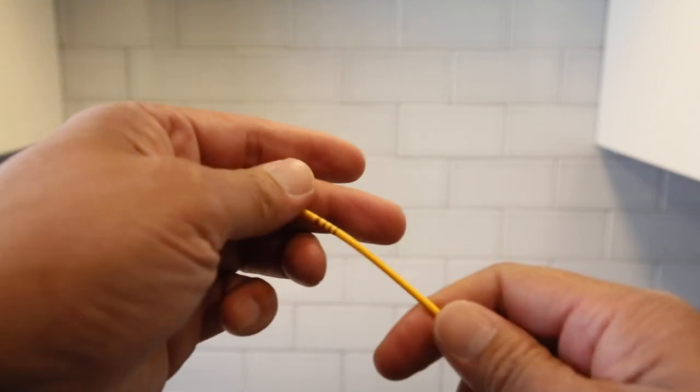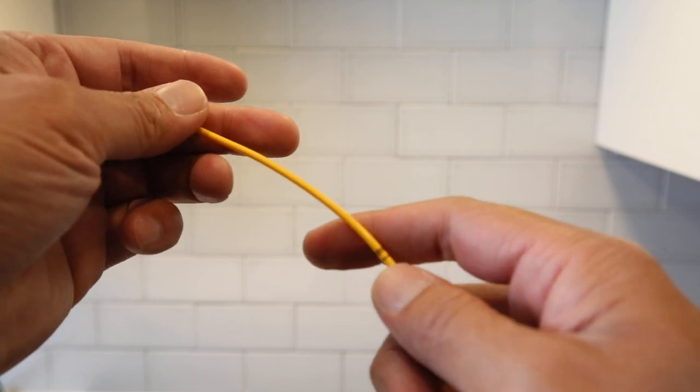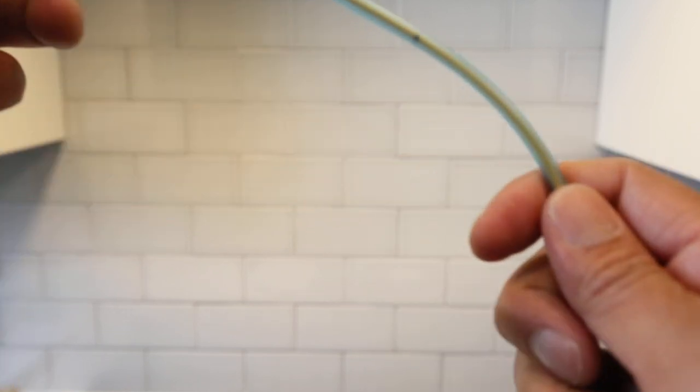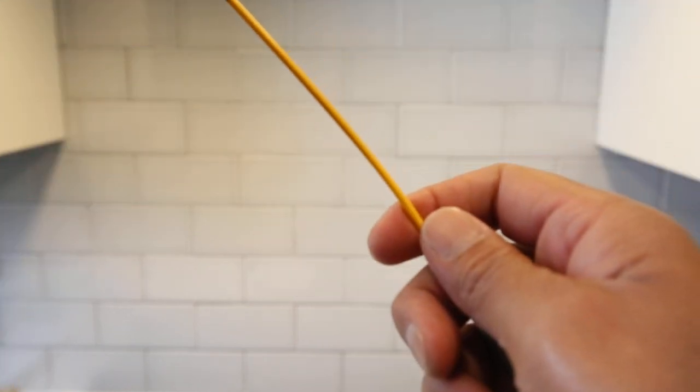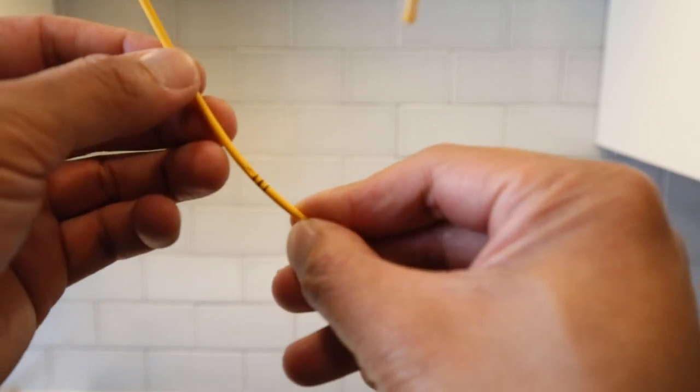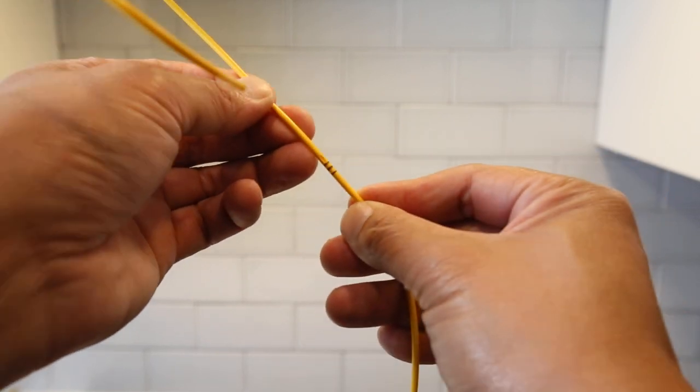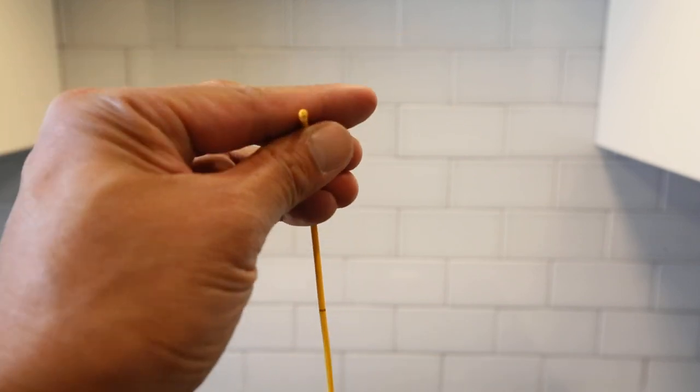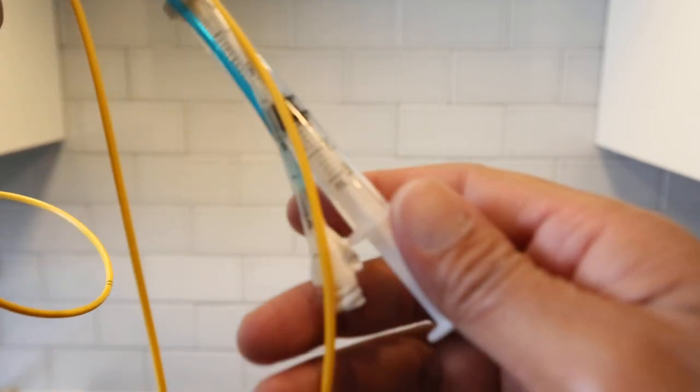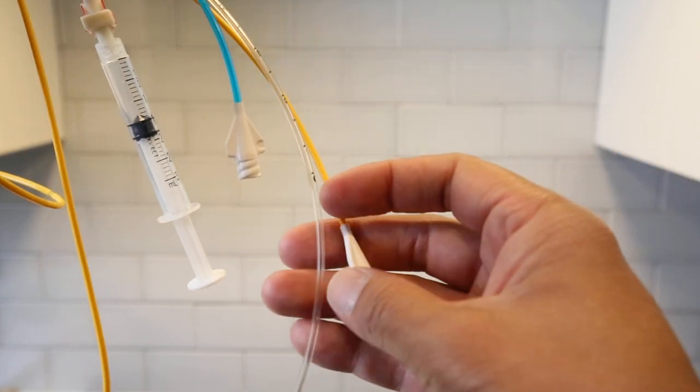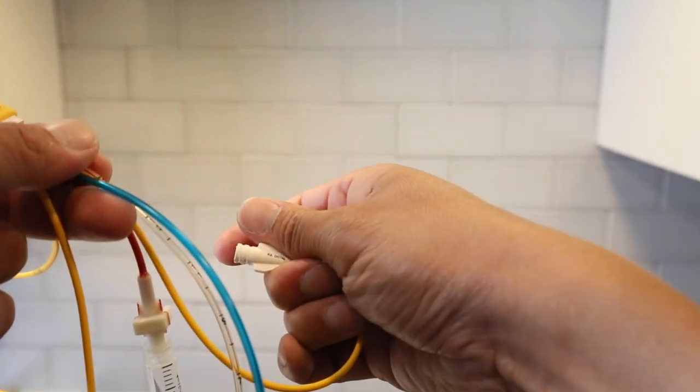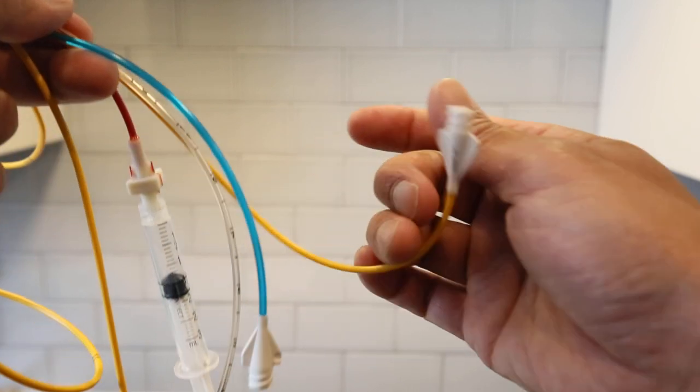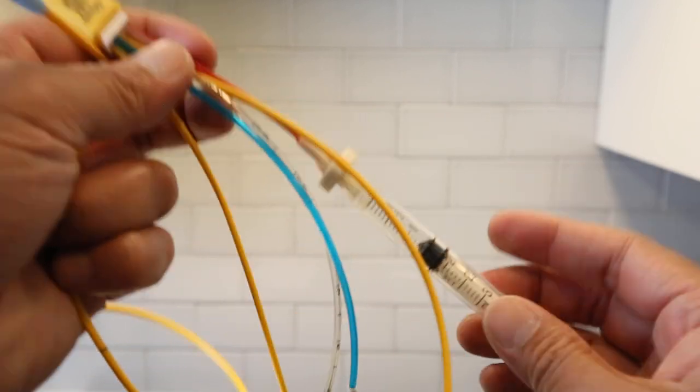So this proximal injectate will coincide with this one, hashtag three. And then this one will coincide with the distal lumen hub. So that would be this one. And now for the finale.